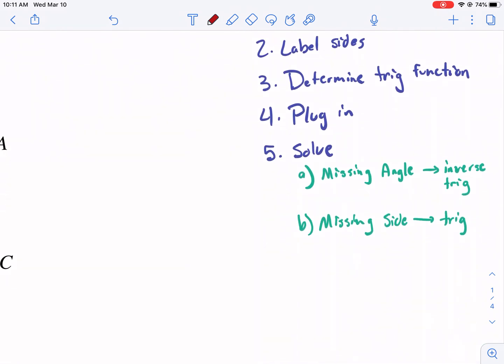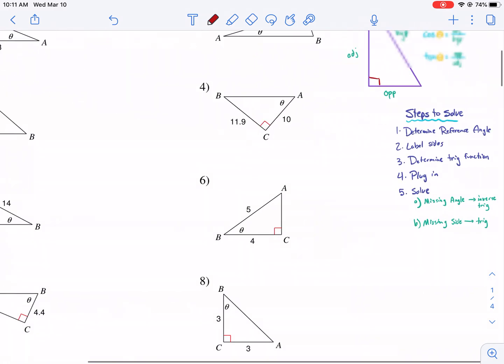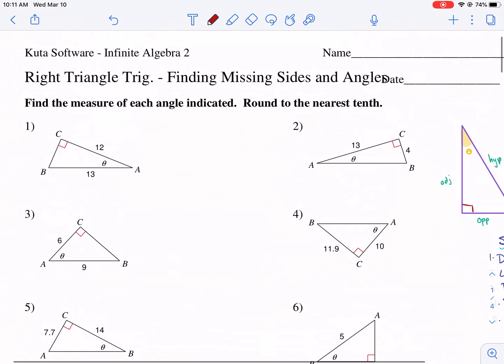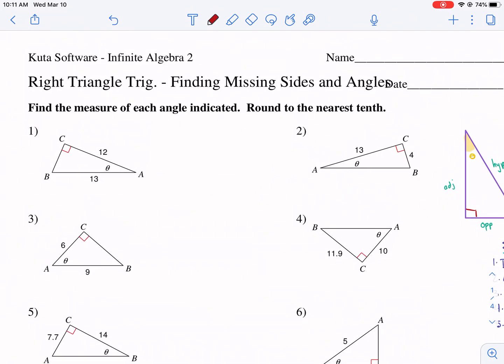If it's a missing angle, we're going to use inverse trig, and if it's a missing side, we're just going to use regular trigonometry. So let's go ahead and figure this out. Find the measure of each angle indicated, so angles indicate that we will be using inverse trig on these ones.